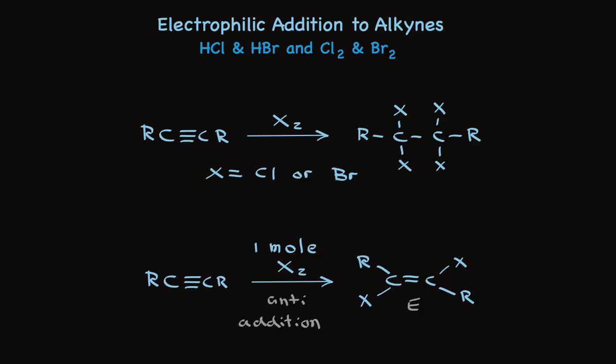The addition of halogen to alkynes has a mechanism that's somewhat complicated. But that lack of understanding of the mechanism doesn't affect our understanding of how to use this. We can use the addition of halogen to make tetrahalides or to make vinyl dihalides.